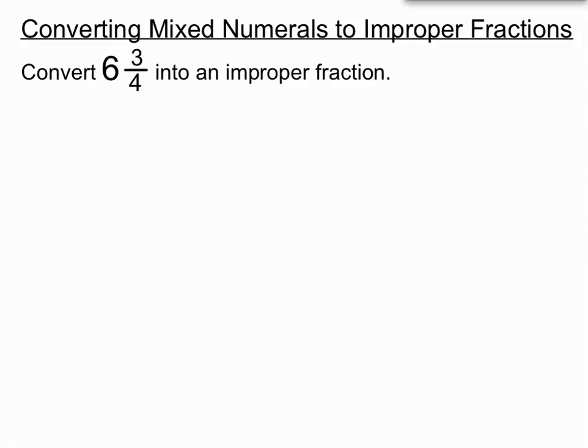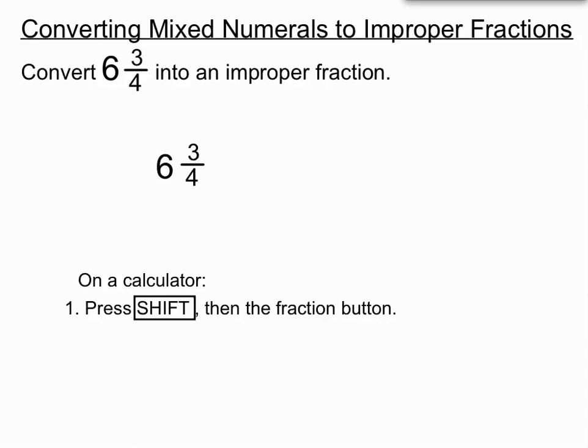Okay, we can do these sorts of things on our calculator though. So let's have a look. 6 and 3 quarters. It's not all that easy to put 6 and 3 quarters properly into your calculator. There is a wrong way to do it. The correct way to do it is to press shift, then the fraction button, and then when you do that, you'll see that the screen on your calculator is giving you 3 boxes to fill in.